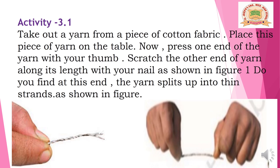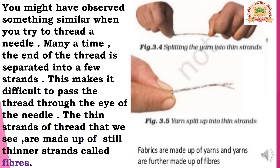The yarn splits up into thin strands — these are small fibers. You might have observed something similar when threading a needle. Many times the end of the thread separates into a few strands, making it difficult to pass through the eye of the needle. Those thin strands are made up of still thinner strands called fibers. That is what happens — you lick it and push it through the needle's eye. Thin strands of yarn are called fibers.